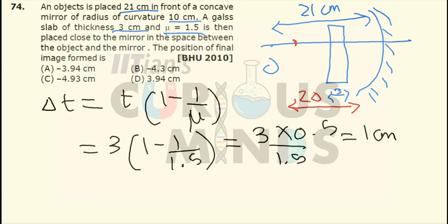After that let us find out these values, the position of the final image formed over here. So after this it will be reflected from the mirror. So for the reflection from the mirror we will use 1/v + 1/u = 1/f.